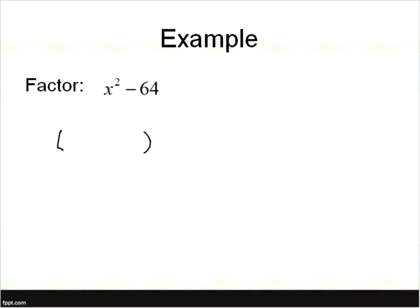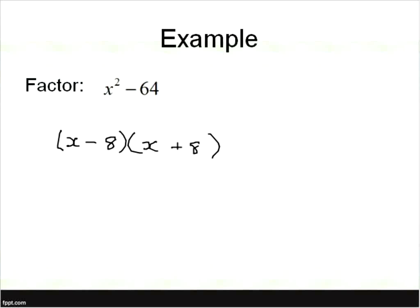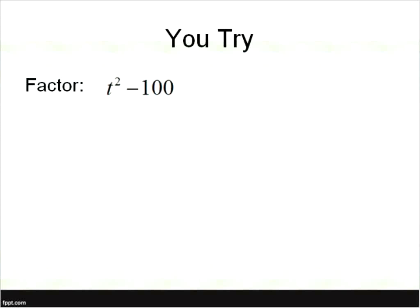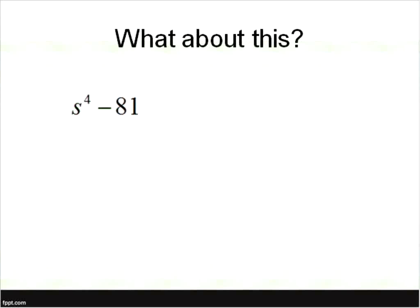Let's do another one — perfect square minus a perfect square. Set up your parentheses: square root of the first term minus the square root of the final term, times the square root of the first term plus the square root of the final term. Done — you really should get to be that quick. Let's do one more. You can try this one yourself — pause the recording and see what you get when you factor those perfect squares. Square root of the first term minus the square root of the final term, times the square root of the first term plus the square root of the final term. That's our final answer.